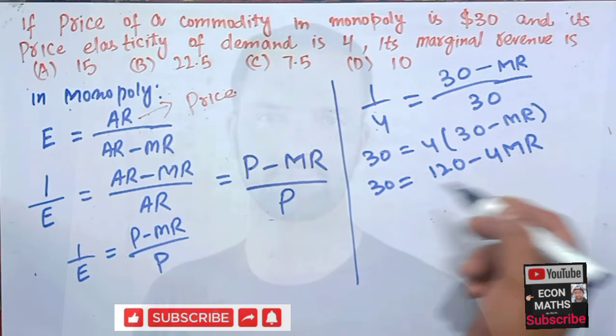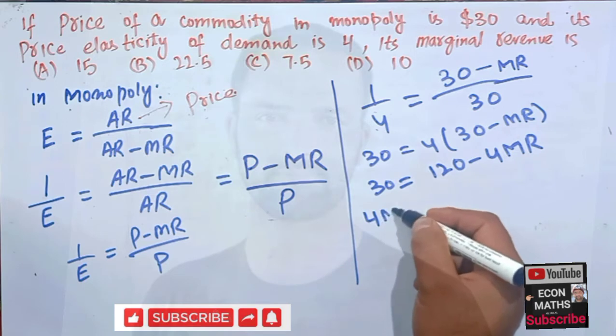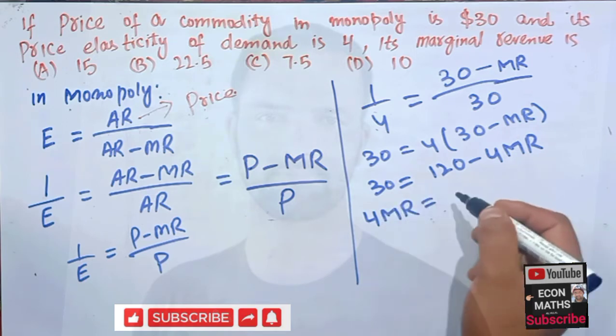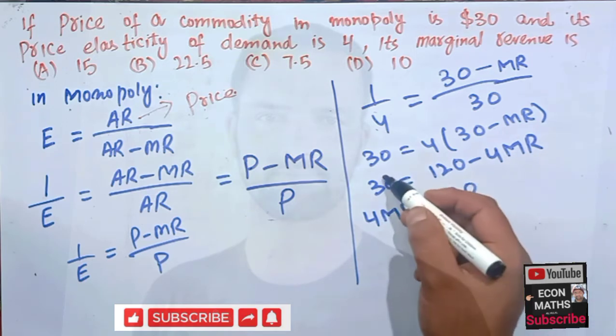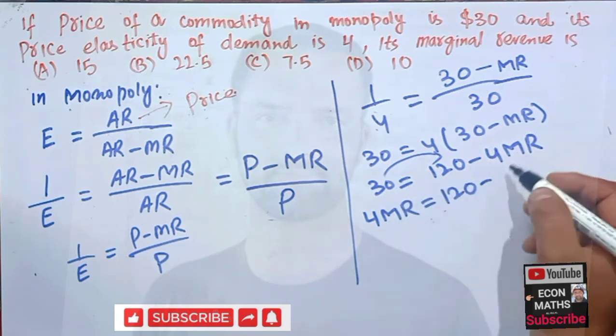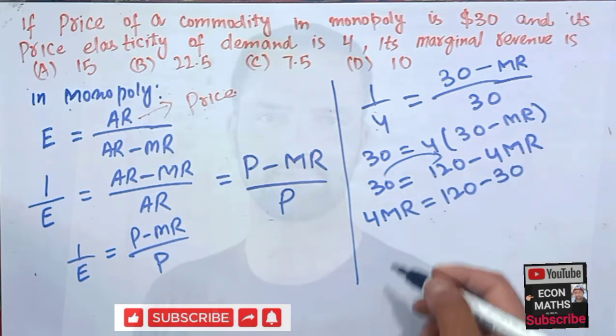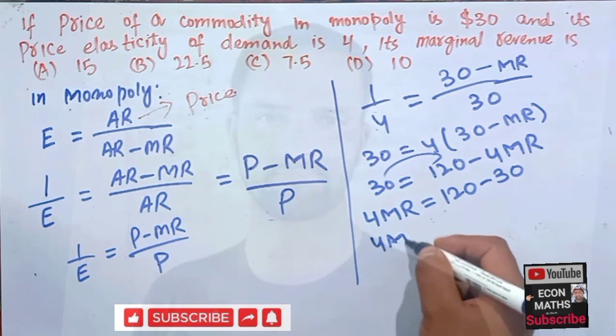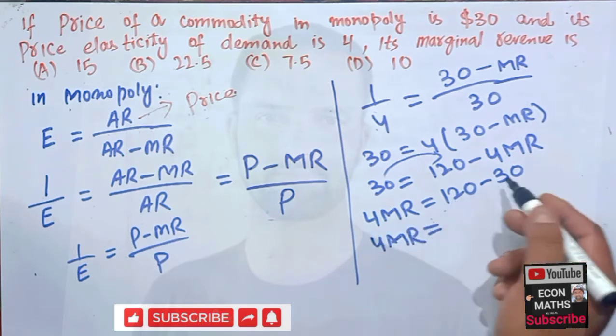This becomes positive 4MR is equal to 120. When transposing this will get negative sign, so if this is minus 30, we have 4MR equals 120 minus 30.